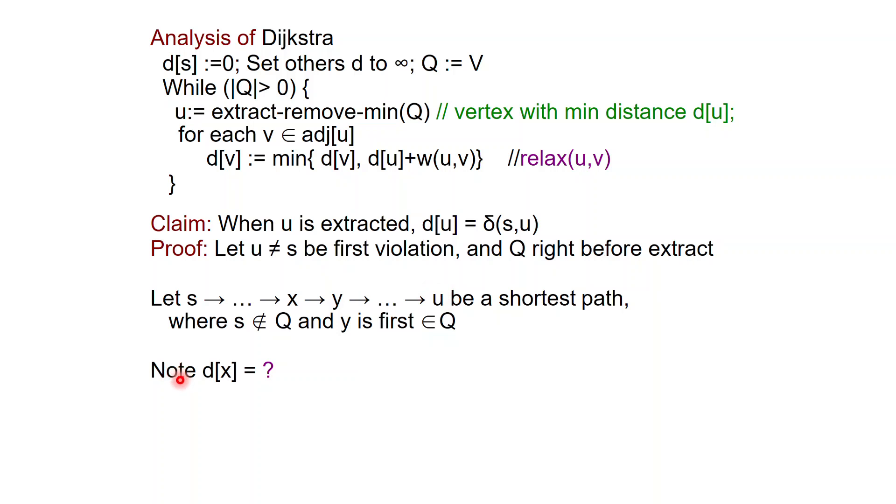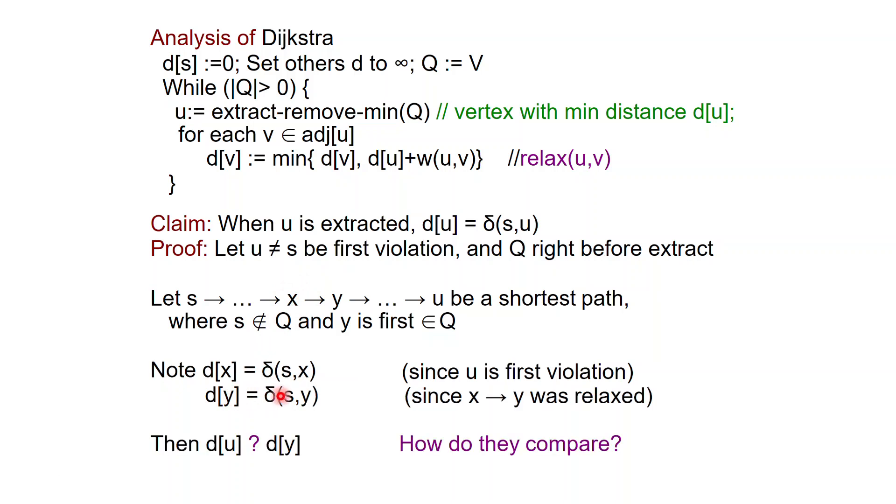The first thing to observe is that the distance of X, the value D of X is equal to delta S of X. Why is that? Because X is not in the queue. So it was extracted from the queue and U was the first violation of this property, the D is equal to delta. So all the ones before they were extracted before they do satisfy this property here. So D of X is equal to delta S of X. Now D of Y is what? Well, when we extracted X, we also relaxed all the edges, right? So D of Y is set correctly to the distance delta S of Y, because the edge X to Y was relaxed.